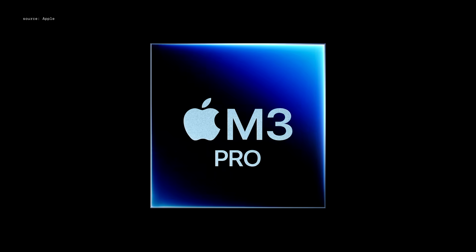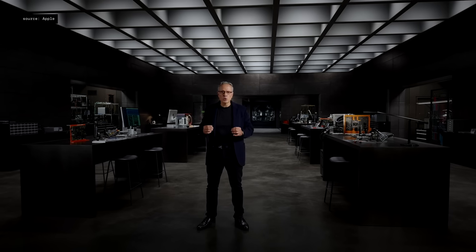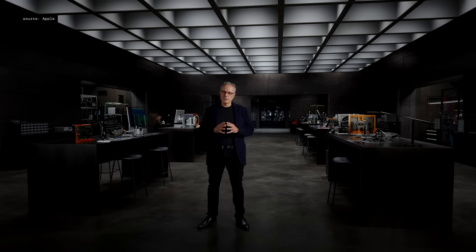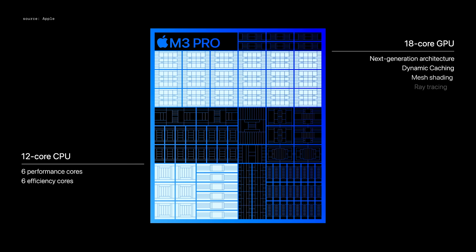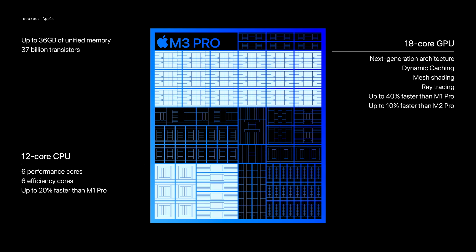M3 Pro scales up that design with increased capabilities for users who need even more performance. It has a 12-core CPU, an 18-core GPU, and is up to 40% faster than M1 Pro.